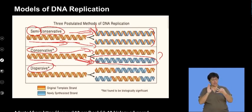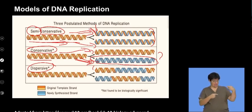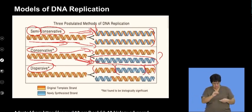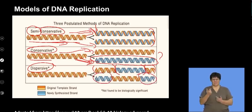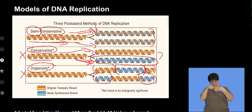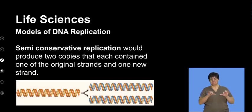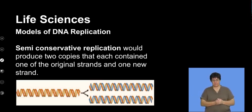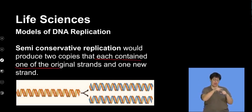A third model, called the dispersive model, proposes that the new strands of DNA have segments of old and segments of new dispersed within them. This model is also found to be erroneous — meaning prone to mistakes — and so both the conservative and dispersive models are not accepted. The semi-conservative model is recognized as the most consistent model for explaining the accuracy of DNA replication, producing new strands each containing one original strand and one new strand.